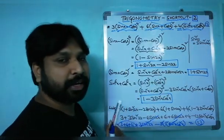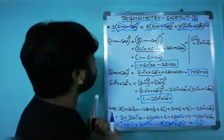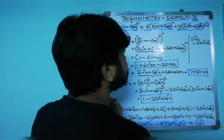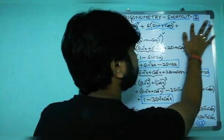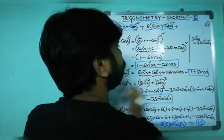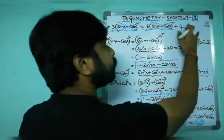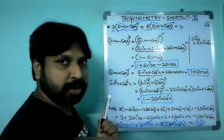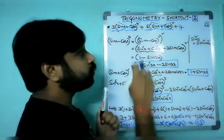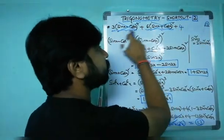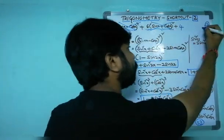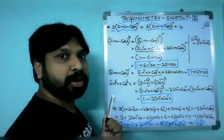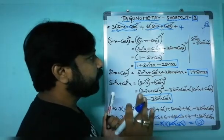One more important point: if instead of sin⁶x + cos⁶x they simply give a plain constant multiplied by 4, you should still add that constant to the sum. So 3 + 6 + 4 = 13. Even a standalone constant must be added. Be careful about that.